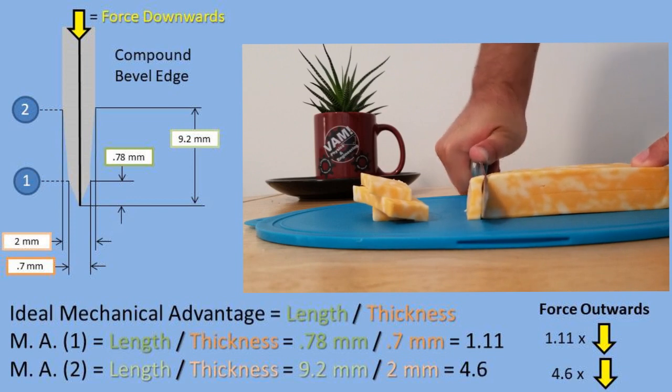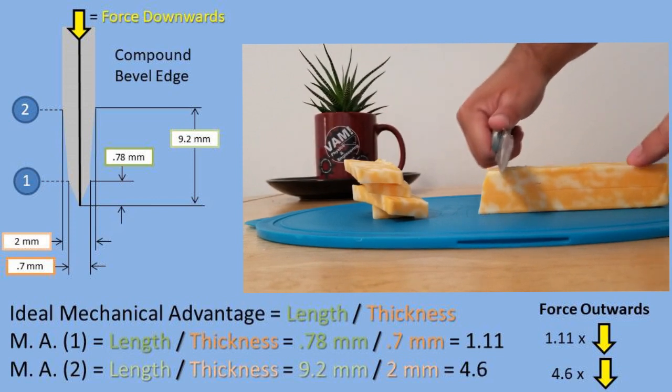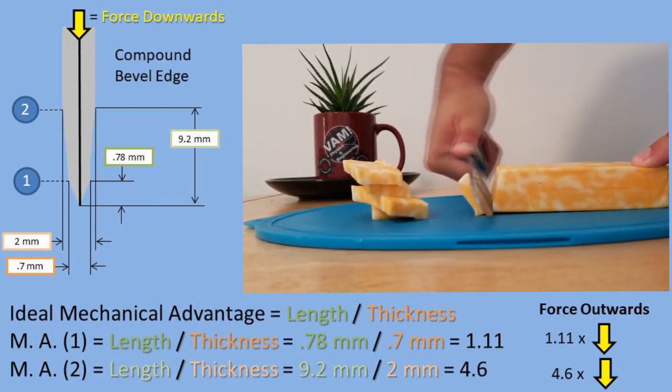So you're probably thinking, wouldn't it make sense to make the breaking edge as gradual of an incline as possible, so you have a greater force multiplier acting outwards to tear apart the cheese?